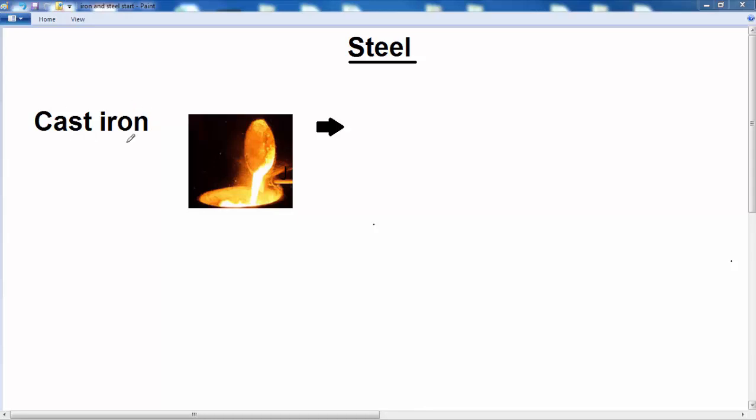So we've got some cast iron here which has come from the blast furnace, it's in its molten state, and this cast iron will contain about 4% carbon. Now the carbon has come from the coke used in the blast furnace process, and as a result the cast iron with this percentage of carbon will tend to be quite hard, but quite brittle.